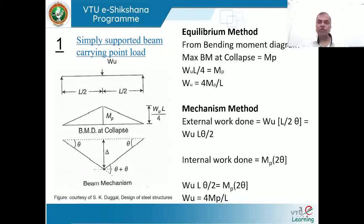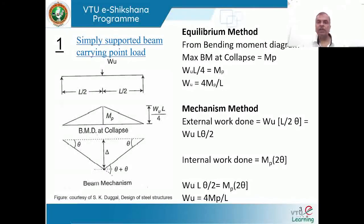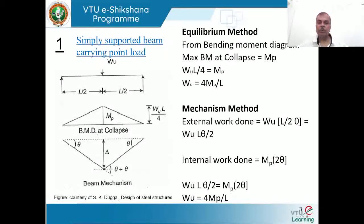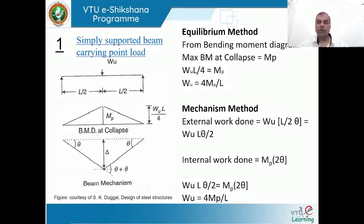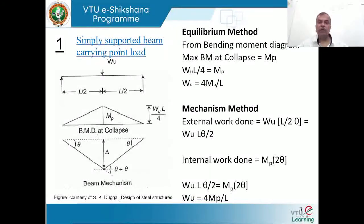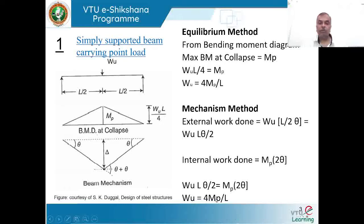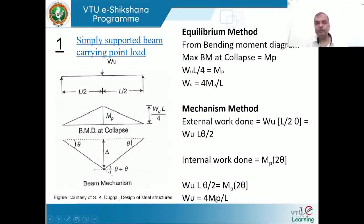If the problem is simple, all three conditions are automatically satisfied, and whether you use the upper bound or lower bound theorem we get only one solution — the ultimate load. I discussed one example: a simply supported beam subjected to a central concentrated load, where the ultimate load carrying capacity is w₀ = 4mp/L.